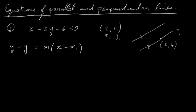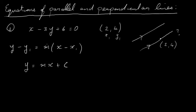We take the equation x minus 3y plus 6 equals 0 and work out its slope. In a previous video, I showed how to do this by rearranging the terms to look like y equals mx plus c. If we can get it into that form, we just read off the slope. That's one way of doing it — I'll also show you another way in a moment.